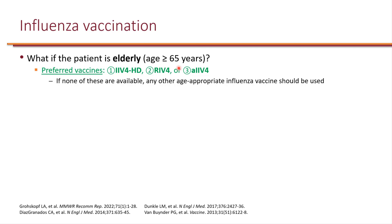For elderly patients — defined as age 65 years or older — there are three preferential recommendations: the high-dose inactivated influenza vaccine, the recombinant influenza vaccine which has a higher dose than the standard inactivated, or an adjuvanted inactivated influenza vaccine. If none of these are available at the pharmacy, any other age-appropriate influenza vaccine should be used, because any vaccine is better than no vaccine. You don't want to order it and have the patient come back, as there is a good chance they may not return.